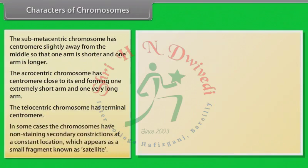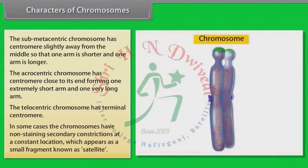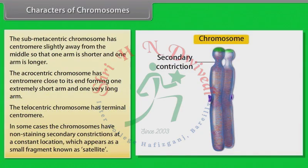In some cases, chromosomes have non-staining secondary constrictions at a constant location, which appear as a small fragment known as a satellite.